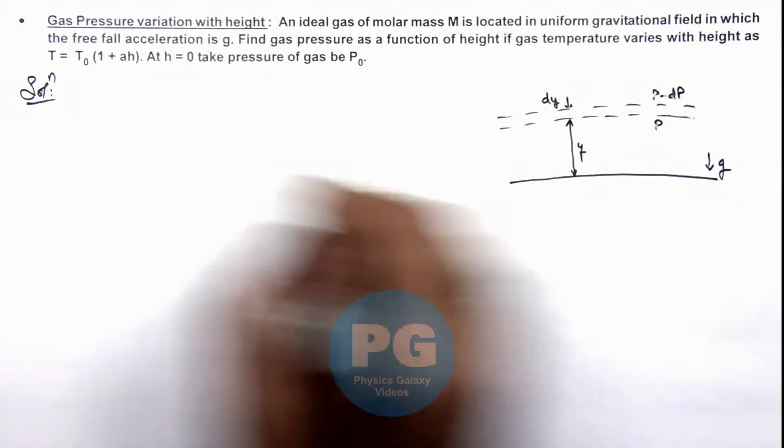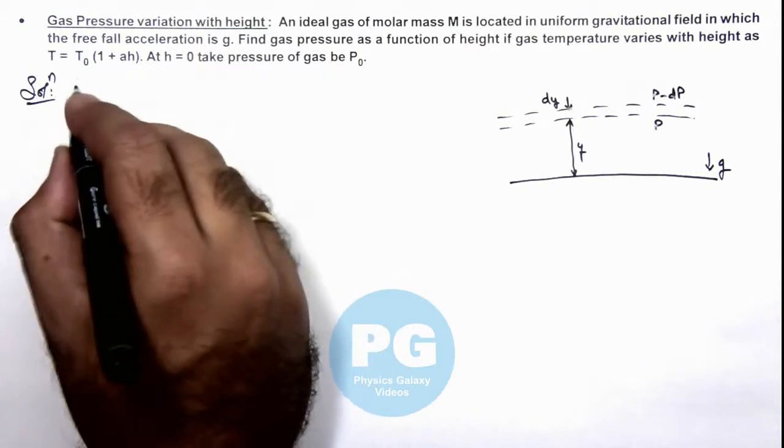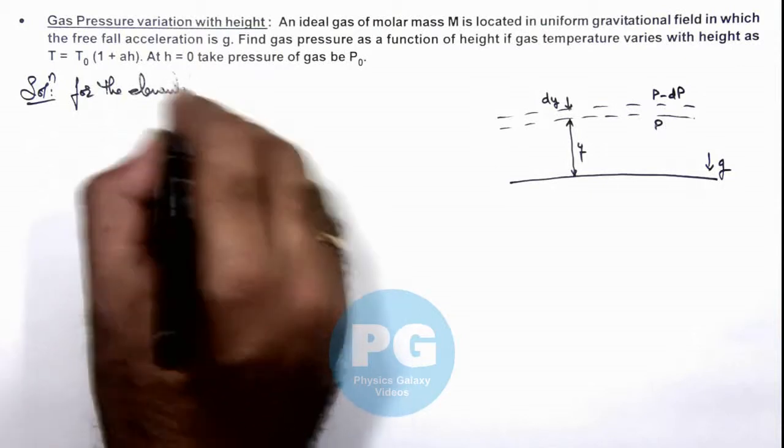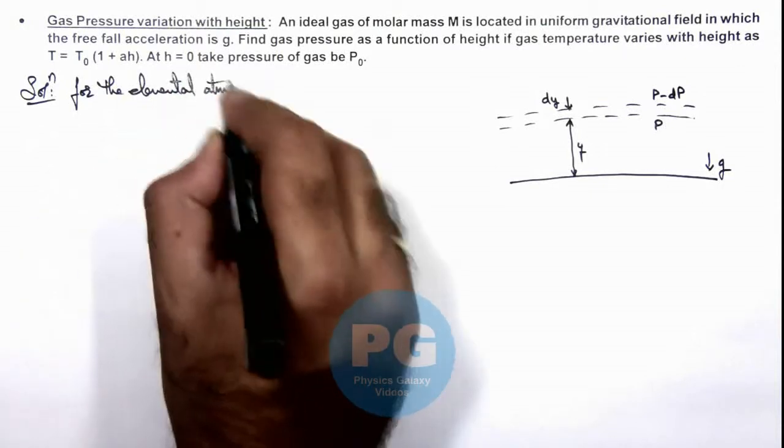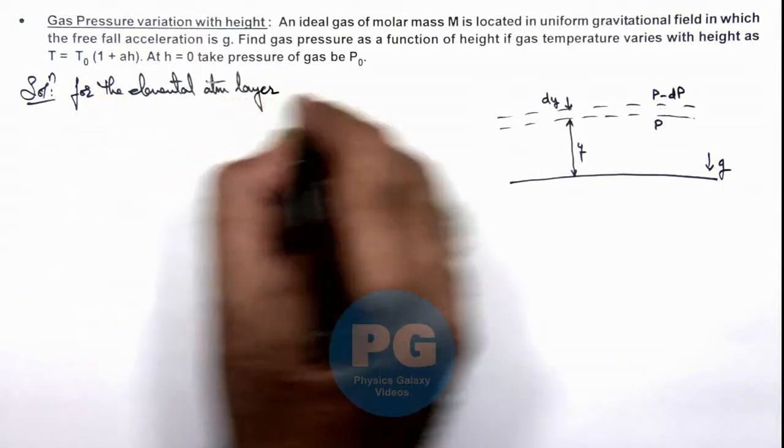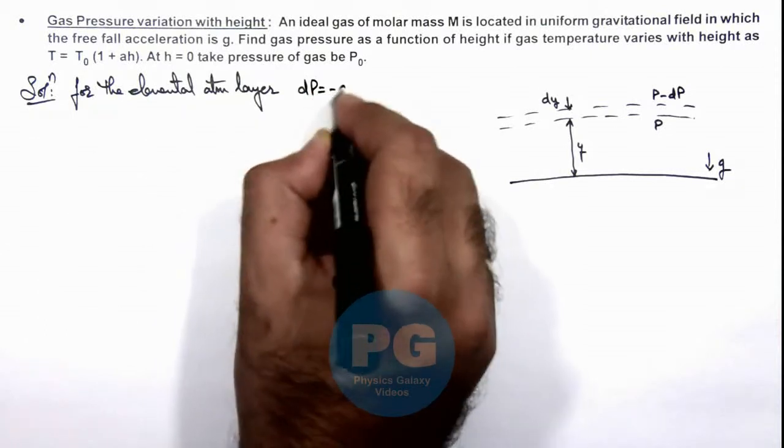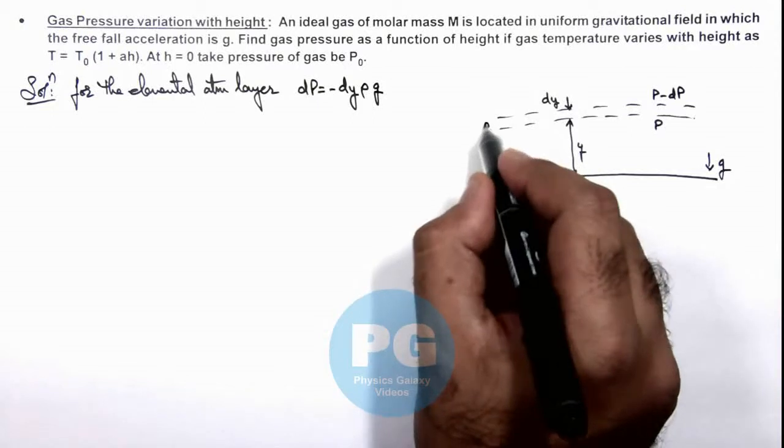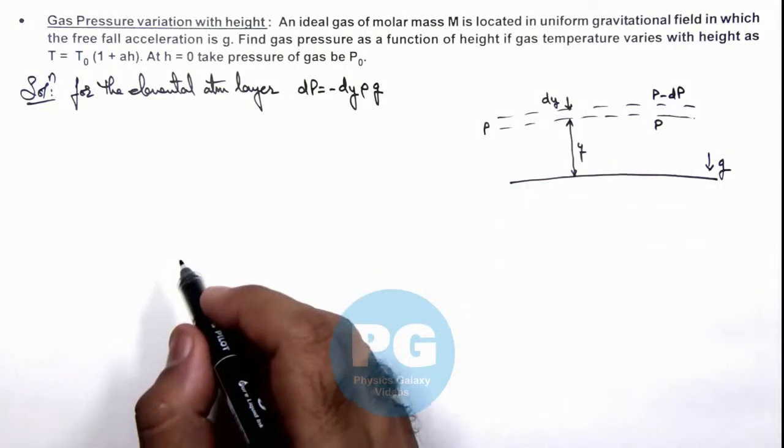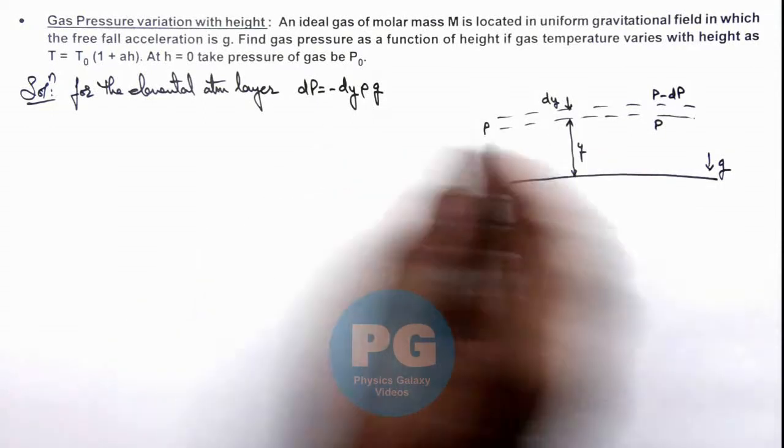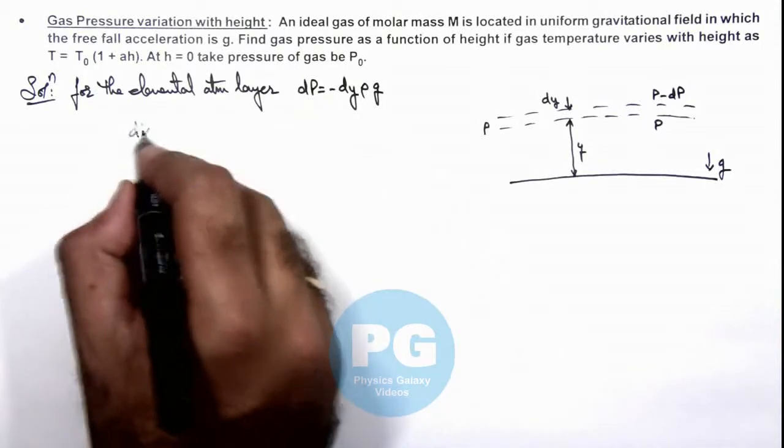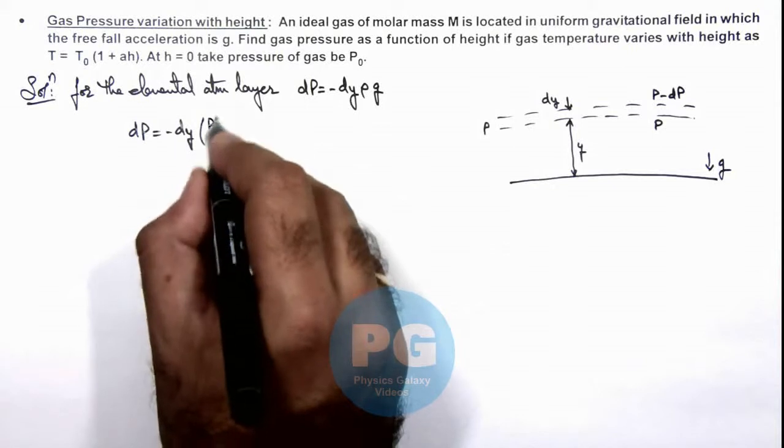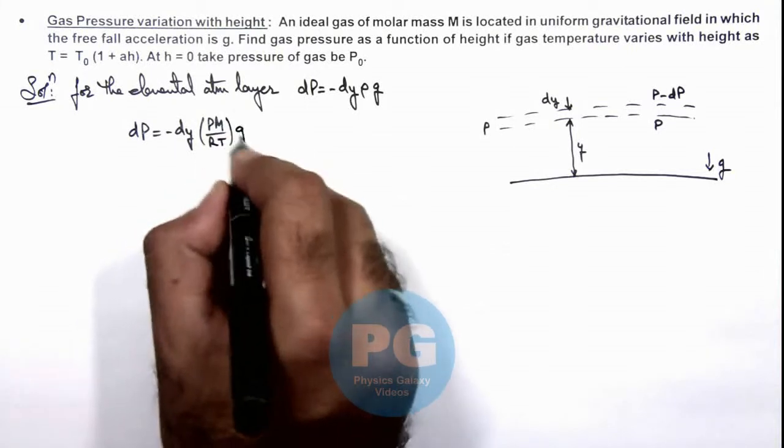Now in this situation we can write for the elemental atmospheric layer, dP is equal to minus dy ρg, if ρ is the atmospheric air density at this point. And by gas law we can write dP is equal to minus dy, ρ we can substitute as P M/(RT) multiplied by g.